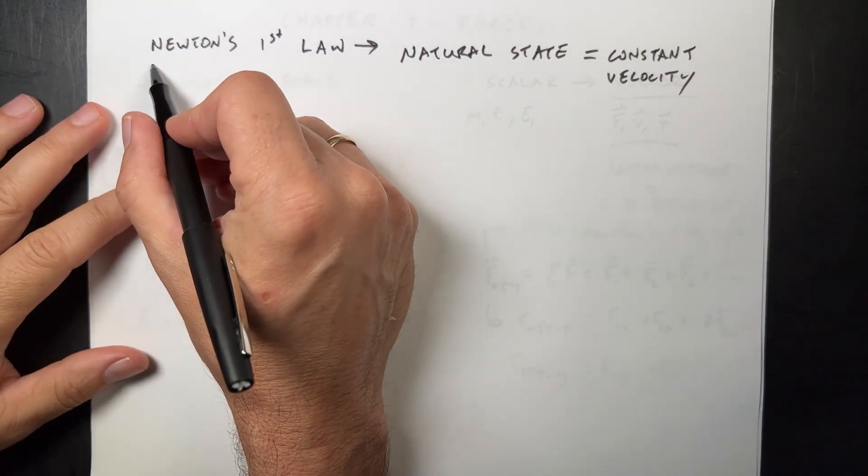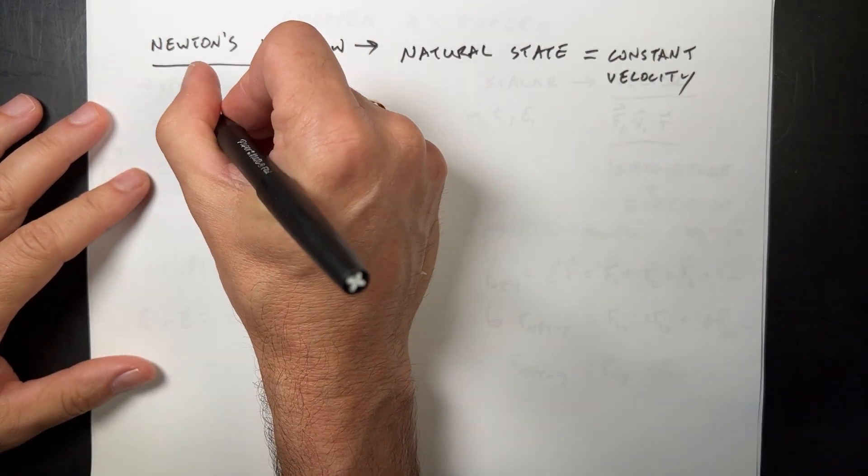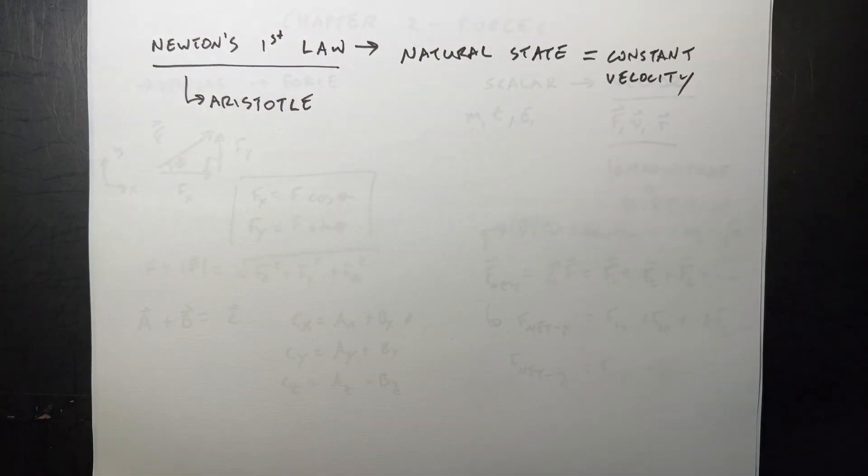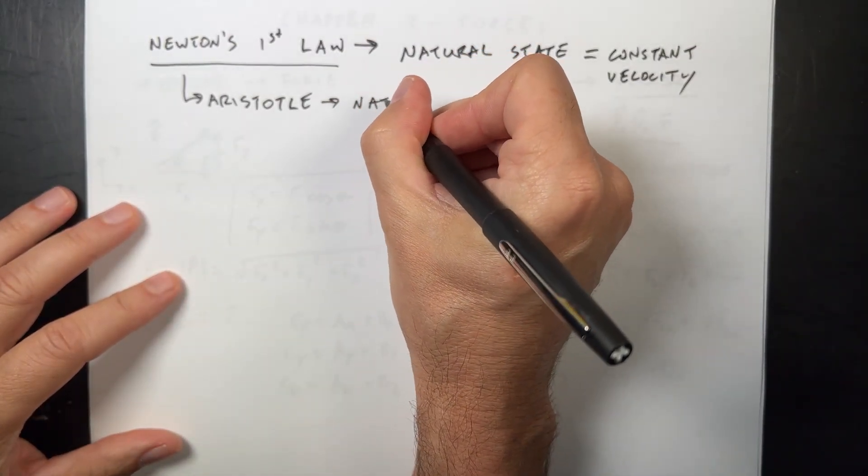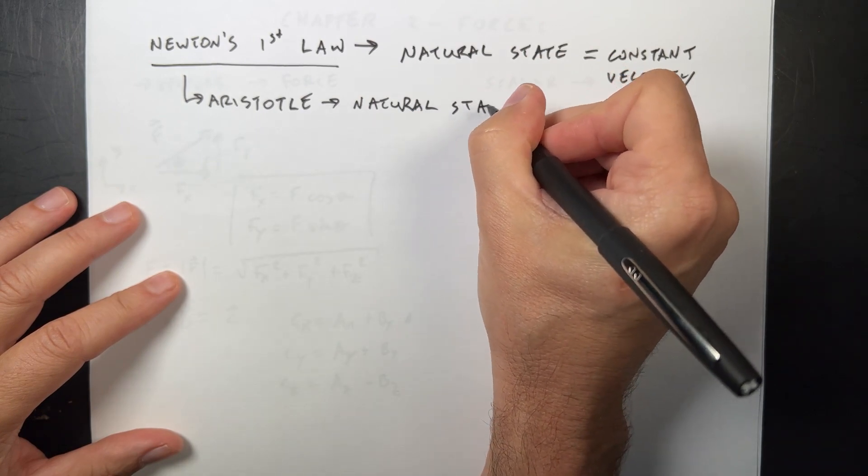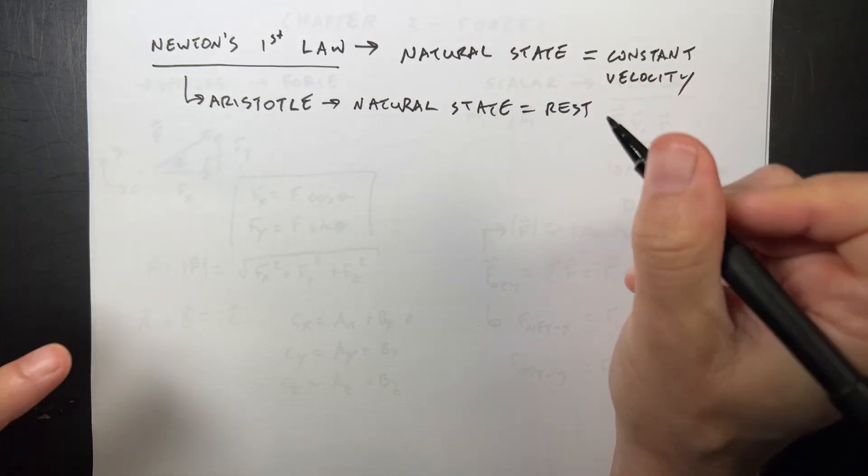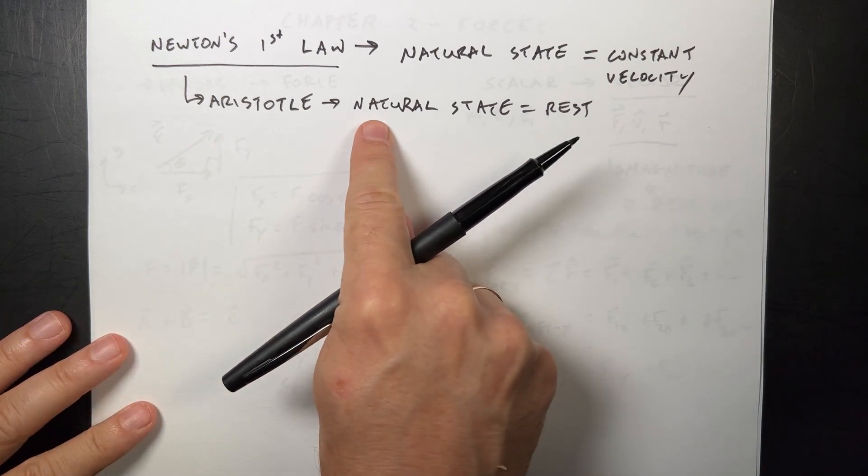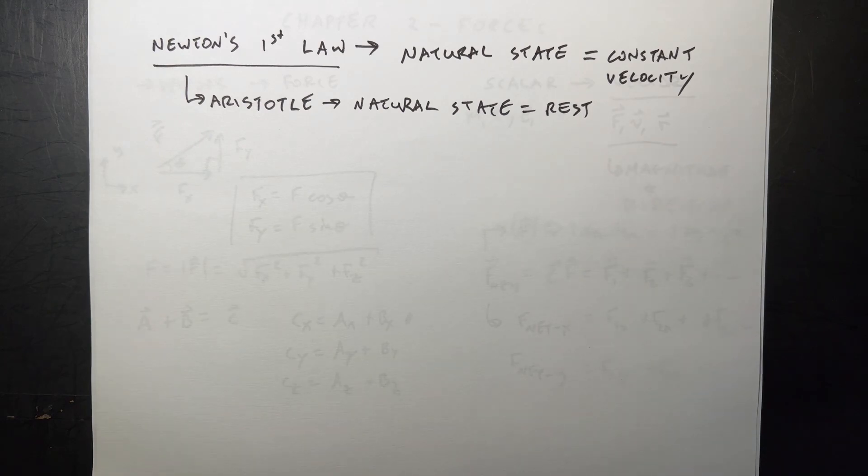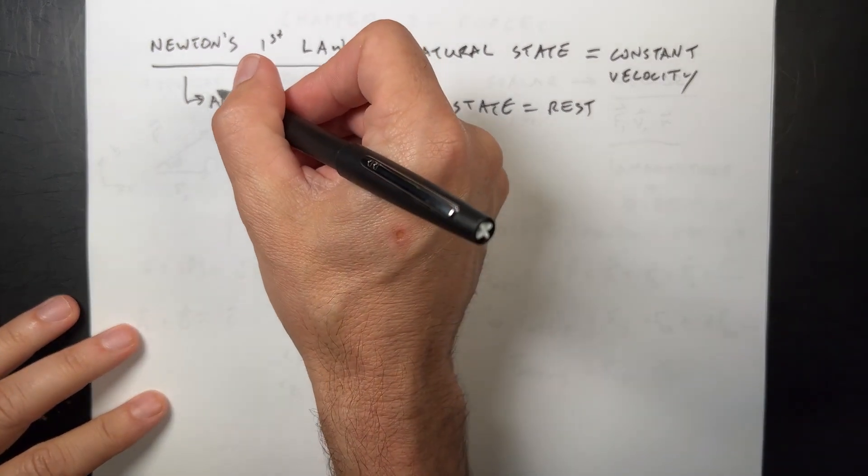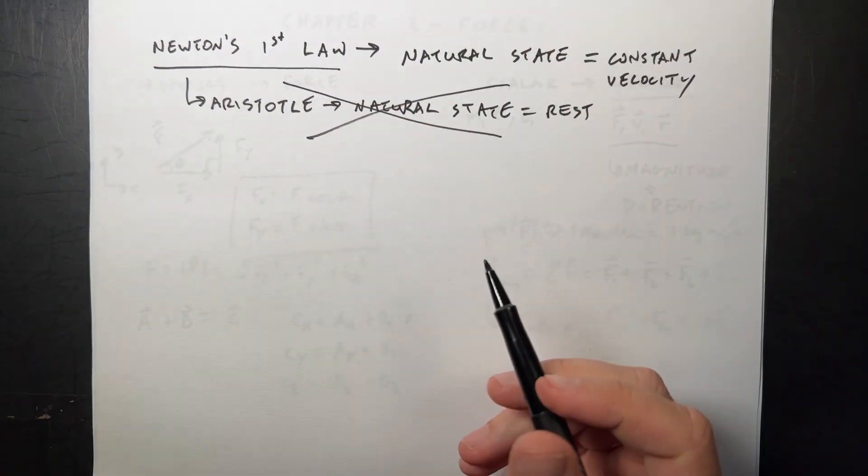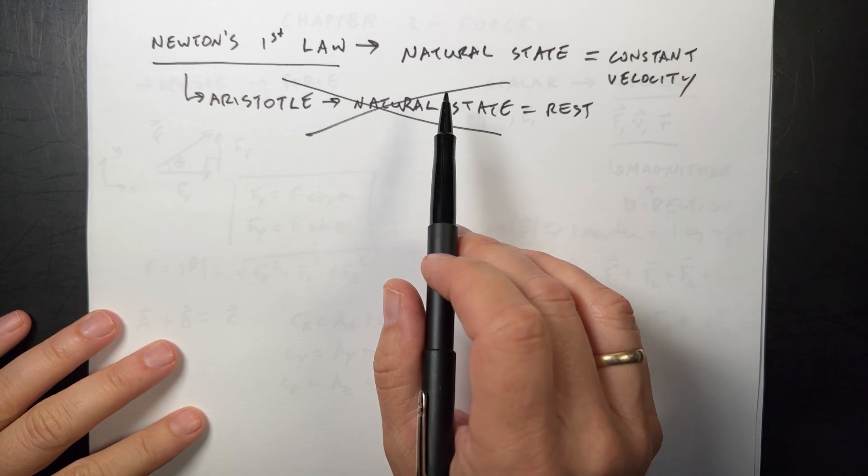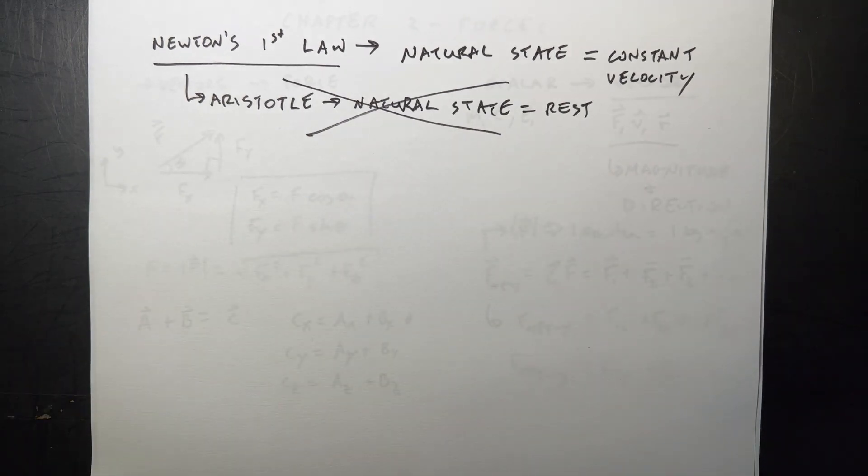This is here because of Aristotle, the Greek philosopher. Aristotle said that if you leave an object alone, it will stop. He said the natural state is at rest. It's kind of a big idea because we often fall into this Aristotle idea. A lot of times you may catch yourself thinking if there's no forces on it, it's going to stop. That's actually wrong. That does not agree with experimental evidence. Newton's first law is really just saying Aristotle was wrong.